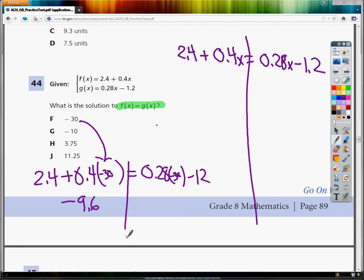I type in, on the other side of the equation, of the equals sign, I type in 0.28 times negative 30 minus 1.2. It gives me negative 9.6. See how they're equal to each other? If they're equal to each other, the answer is whatever number that you plugged in.